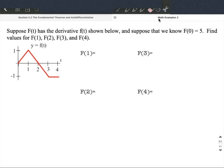We know F(t) has derivative f(t), given by this graph below. We also know that F(0) = 5. Our goal is to find F(1), F(2), F(3), and F(4).